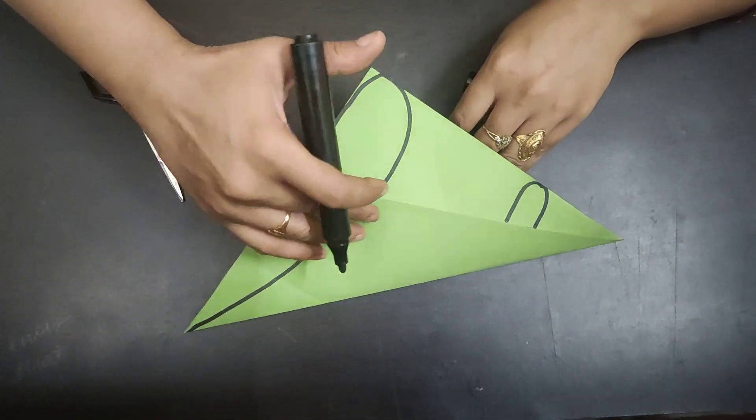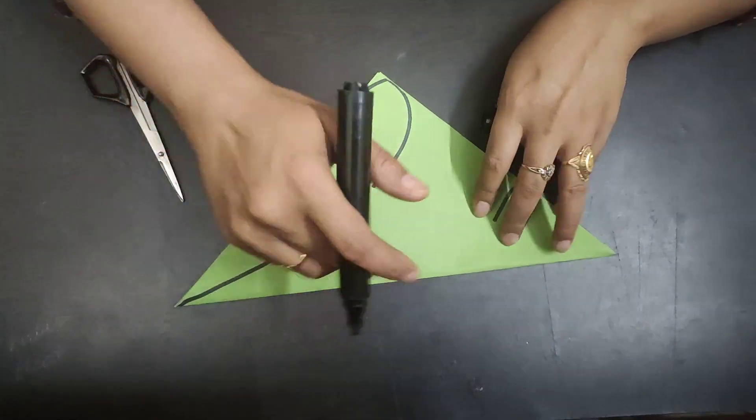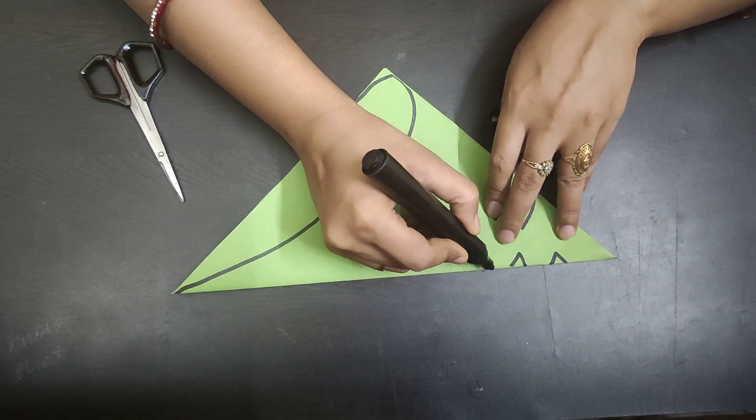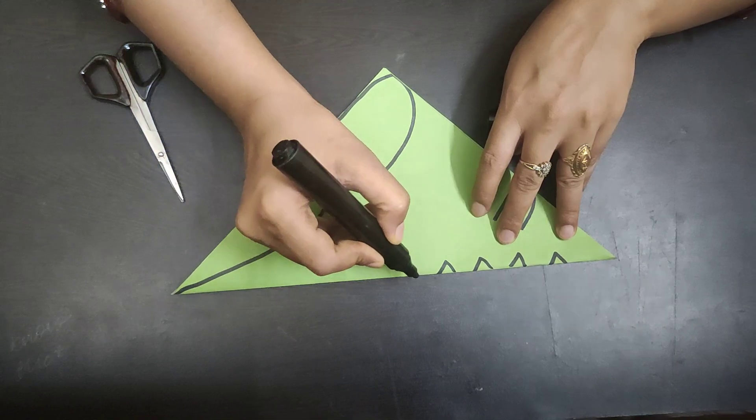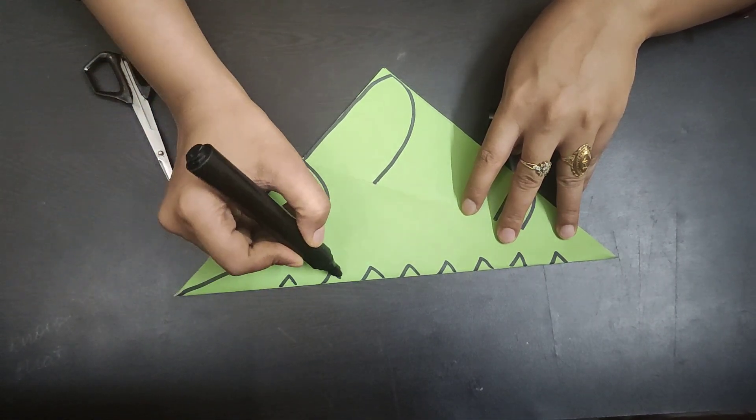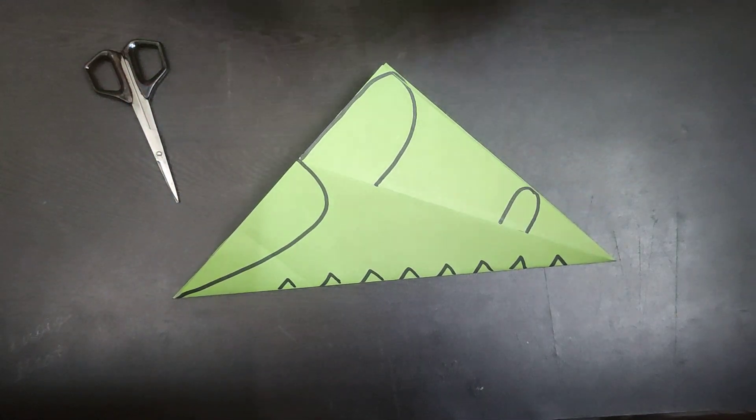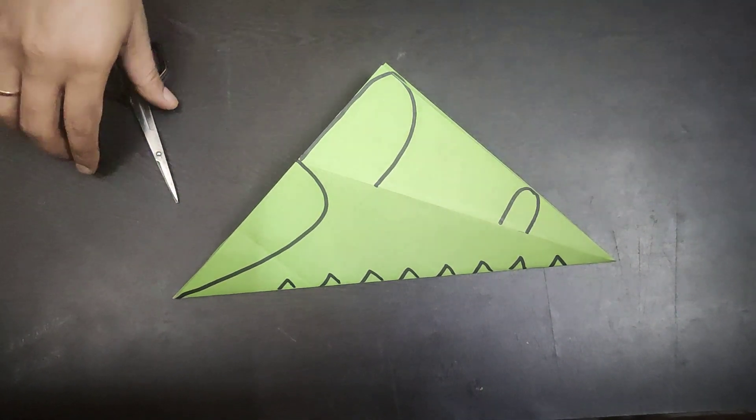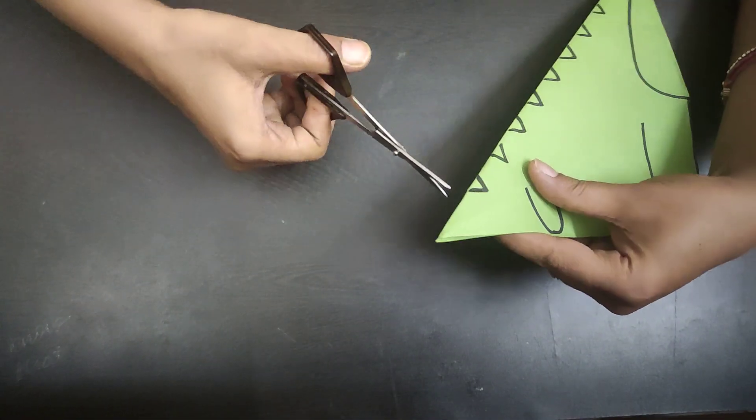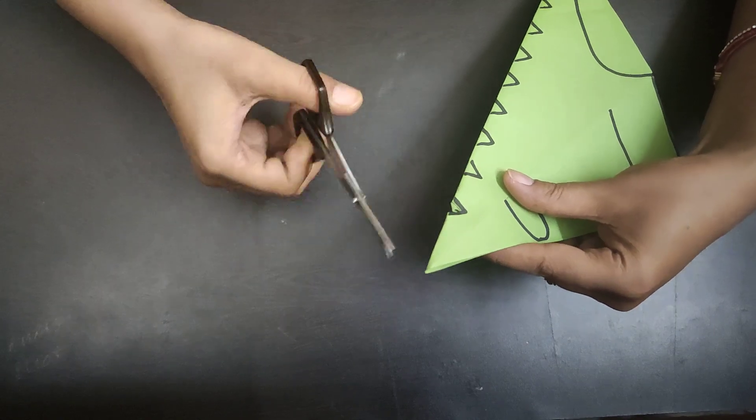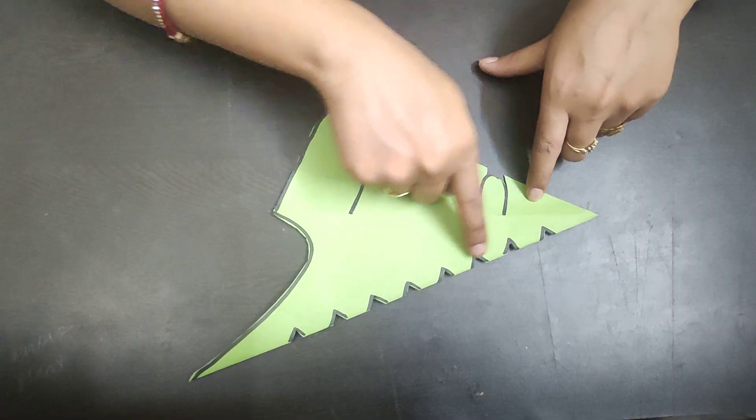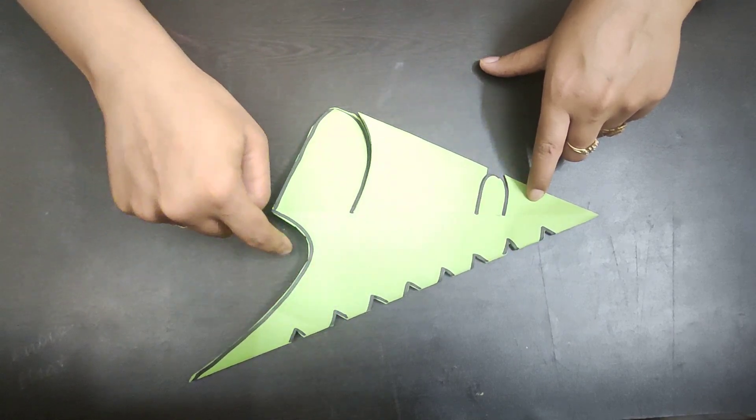You have seen this folded side. Along this folded side, draw small triangles. Now with the help of scissor cut each part. We have cut all the parts with the help of scissor.